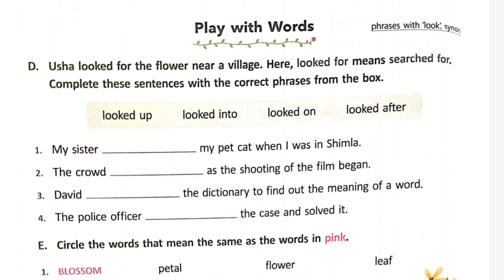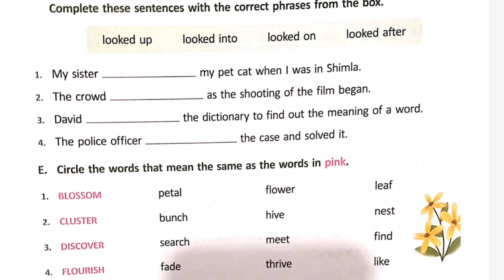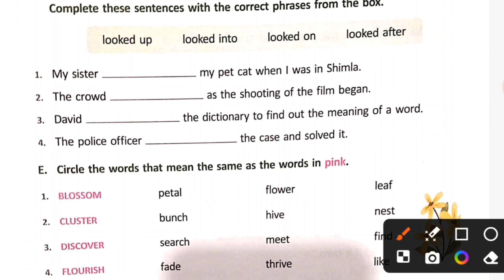Usha looked for the flower near a village. Here 'looked for' means searched for. Complete the sentence with the correct phrases from the box. As the shooting of the film began, the crowd looked on.